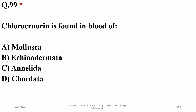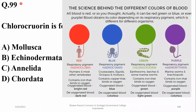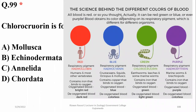Question 99: Chlorocruorin is found in the blood of some leeches and they belong to Annelida. Different types of blood colors exist in the animal kingdom: blue due to hemocyanin (copper-containing) in Mollusca, red hemoglobin most common in humans and other vertebrates, green chlorocruorin, and purple hemerythrin found in some marine worms and Brachiopoda. Right option is Annelida.